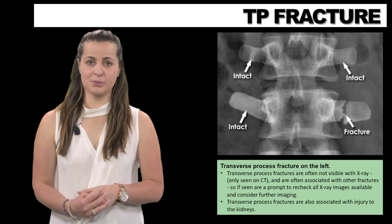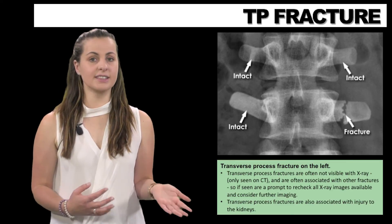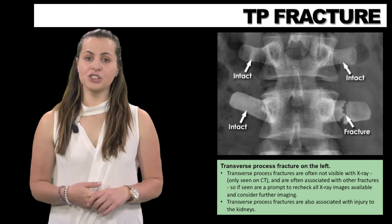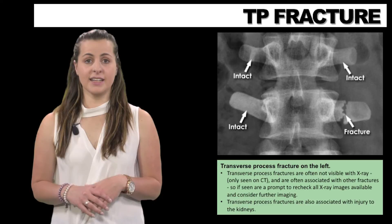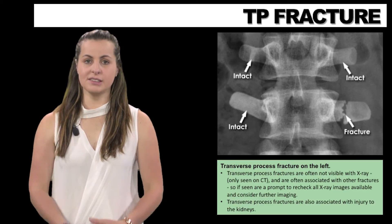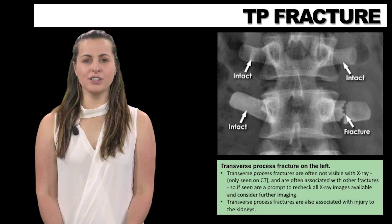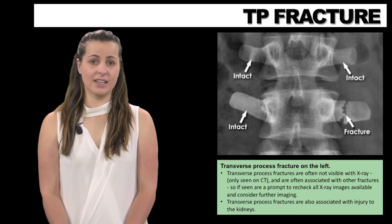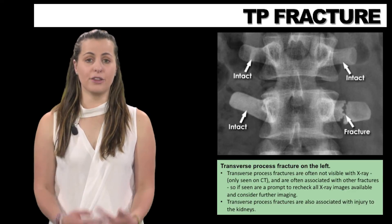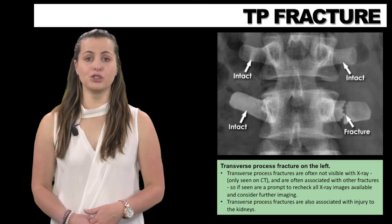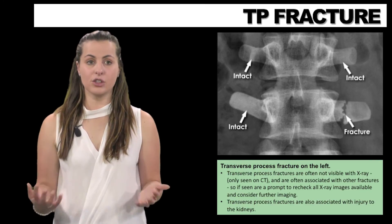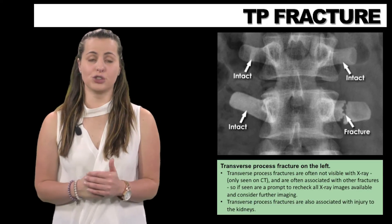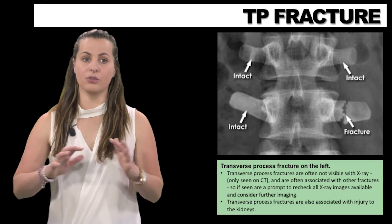The following scan demonstrates a classic transverse process fracture, which is best seen on an AP view. Such spinal fractures may be isolated to the spinous or transverse processes, and transverse process fractures are often not visible on x-ray. Some can only be seen on CT and are often associated with other fractures. If seen, it is important to recheck all x-ray images and consider further imaging. Transverse process fractures are also associated with injury to the kidneys depending on the level.